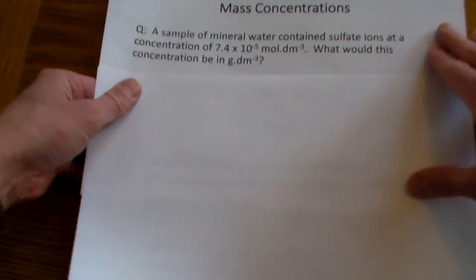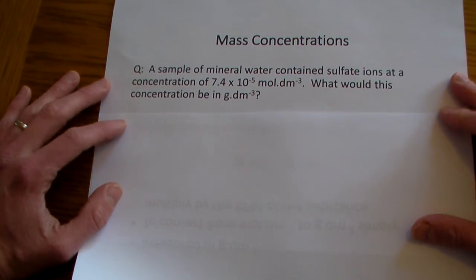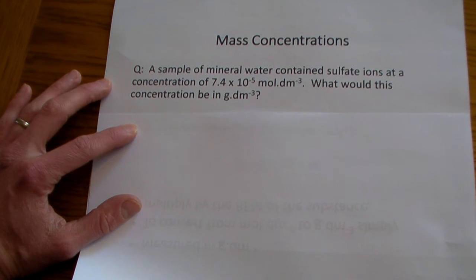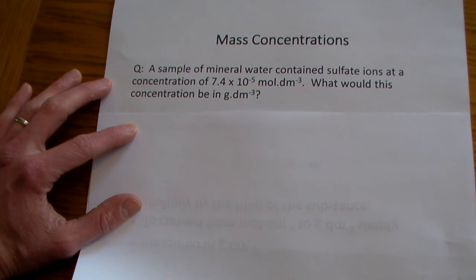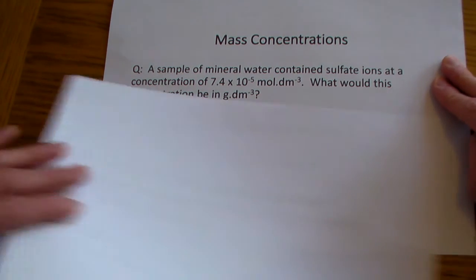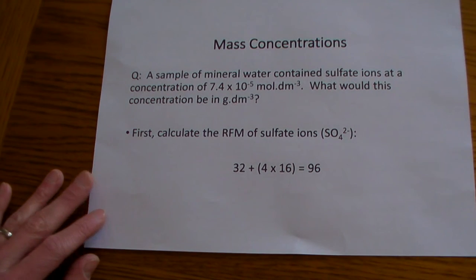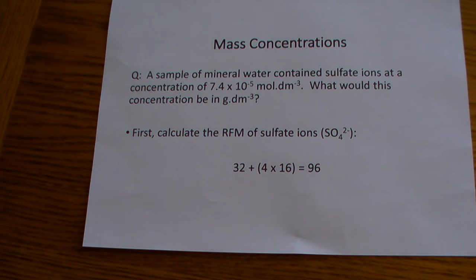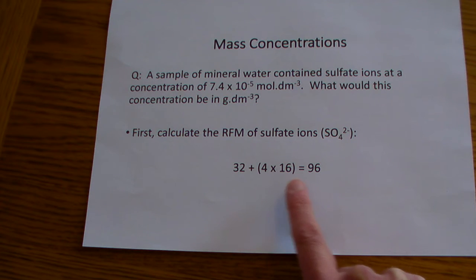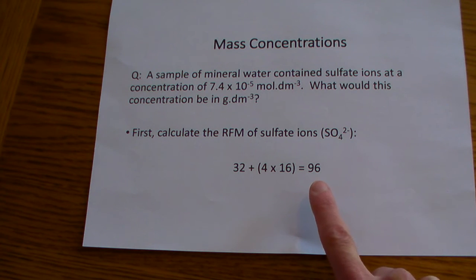So we're going to look at a worked example here. The worked example we've got is for sulphate ions. A sample of mineral water contains sulphate ions at a concentration of 7.4 × 10⁻⁵ moles per decimetre cubed. What would this be in grams per decimetre cubed? The first thing we need to do is work out the RFM of the sulphate ions, by adding together the mass of the sulphur atom and four oxygen atoms. The RFM of the sulphate ion is 96.